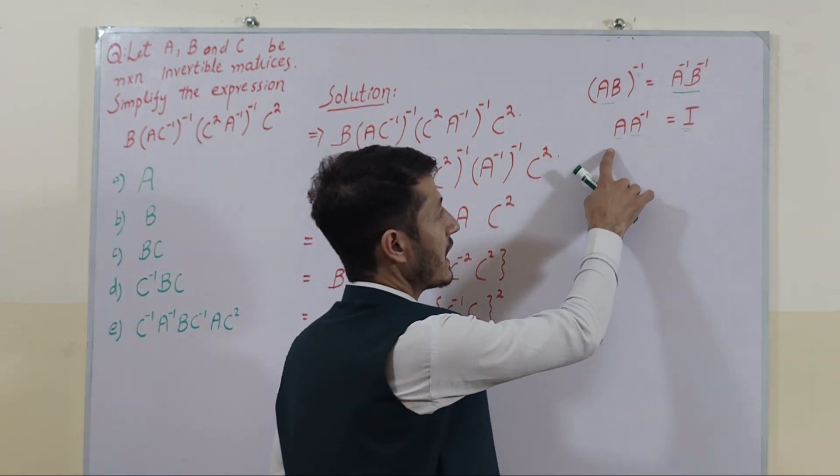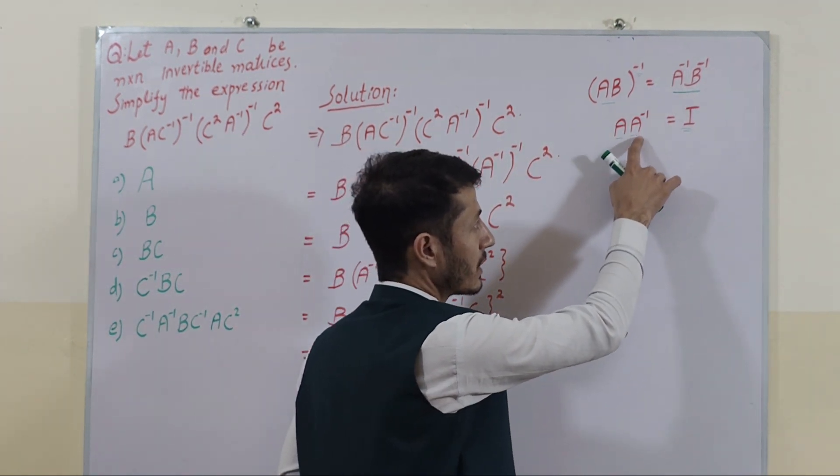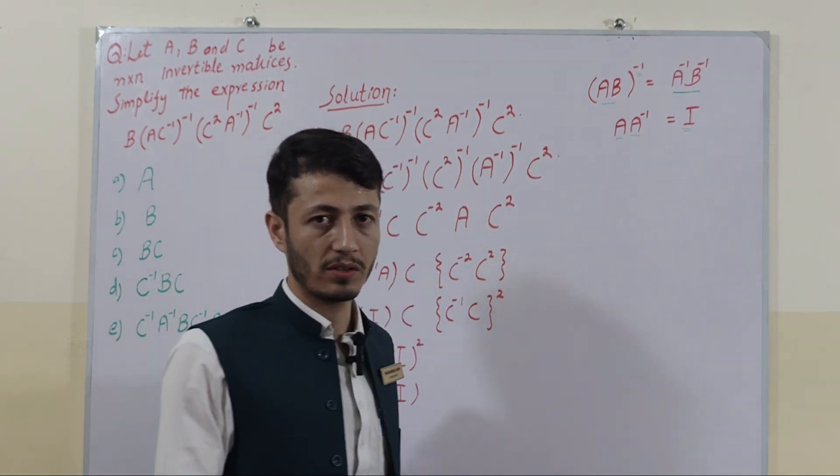Also, the matrix A multiplied with its inverse gives us the identity matrix.